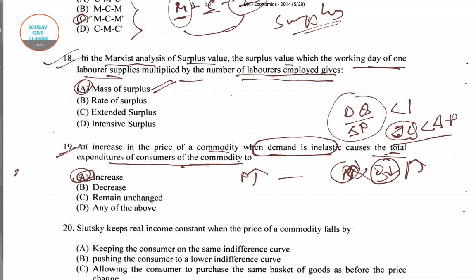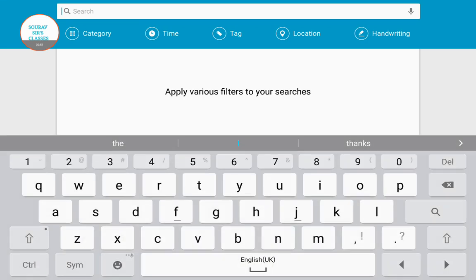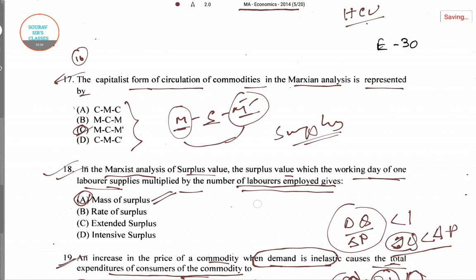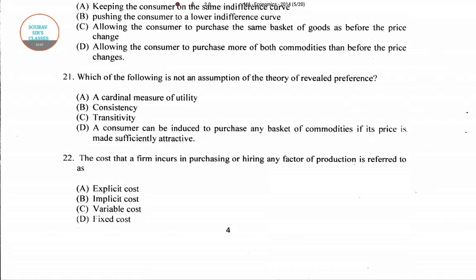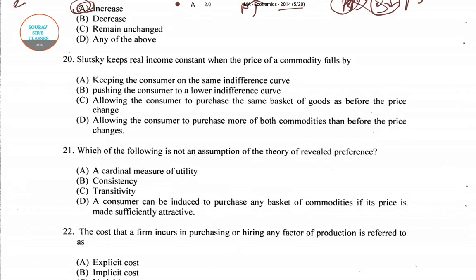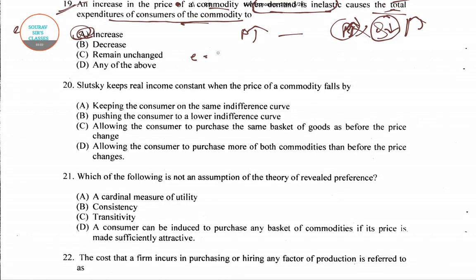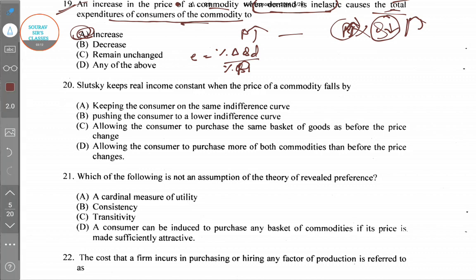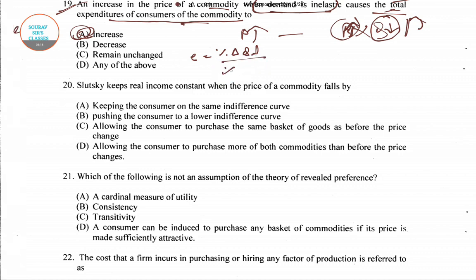To explain again: elasticity is given by percentage change in quantity demanded divided by percentage change in price. When we call it inelastic, it means this ratio is less than one. Rearranging, percentage change in quantity demanded is less than percentage change in price.